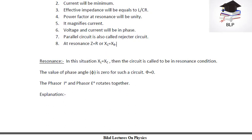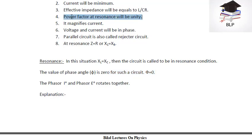At resonance, as I told you in my last lecture, both two frequencies will come out to be equal. So in this situation, when XL equals XC, the circuit is called in the resonance condition. The value of phase angle is zero for such a circuit, so phi equals zero. That is why the power factor at resonance comes out to be unity — because our phase angle equals zero. And the phase current and phase frequency rotate together because our voltage and current are in phase.